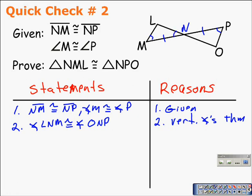As we've seen in previous proofs, we have two angles and the included side. So that is angle-side-angle, and that's enough to prove that triangle NML is congruent to triangle NPO.